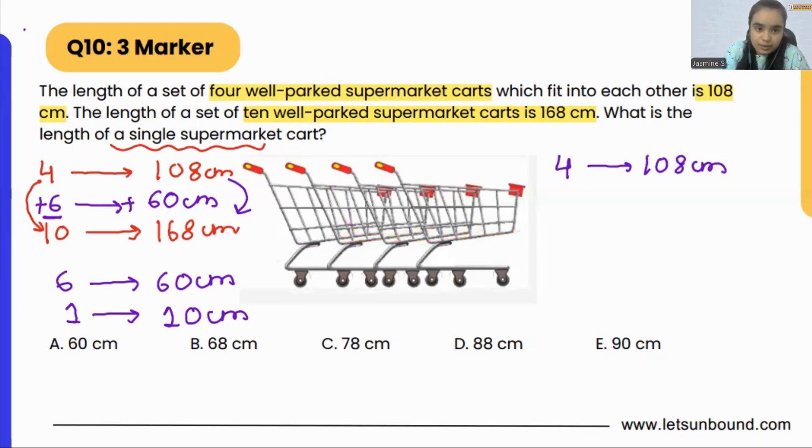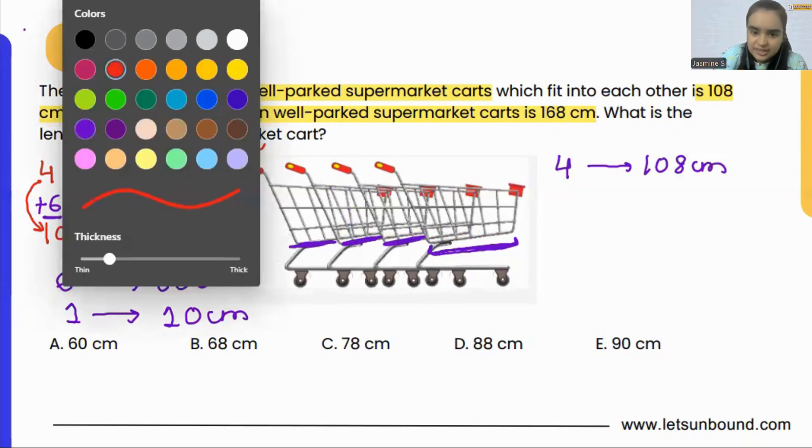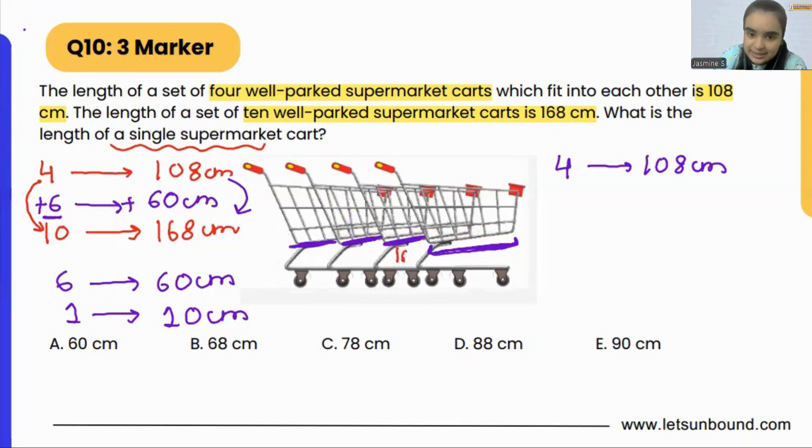Now, from here, if we are going to remove this part, this part, this part, and this part, then we will be left with the length of single trolley. And we know that each extra part is 10 cm. So, this will be 10 cm. This is also going to be 10 cm. So, basically, 10 plus 10 plus 10. That is 30 cm. If we will remove 30 cm from 108, we will get our answer.